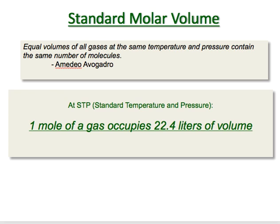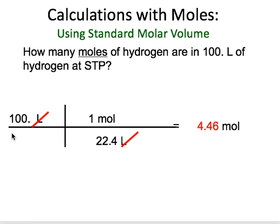Example three involves standard volume. Avogadro said equal volumes of all gases at the same temperature and pressure contain the same number of molecules. One mole of gas at STP — 273 Kelvin and one atmosphere — occupies 22.4 liters. How many moles of hydrogen are in 100 liters of hydrogen? We have liters and moles, so we use the conversion: one mole is 22.4 liters. It's just a division: 100 divided by 22.4 equals 4.46 moles, to three significant digits.